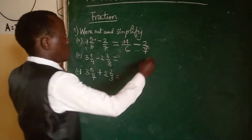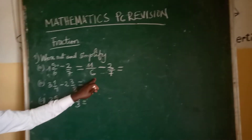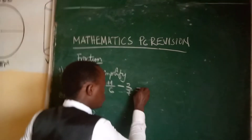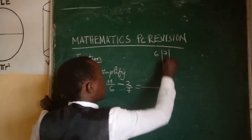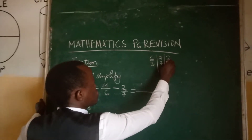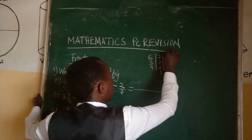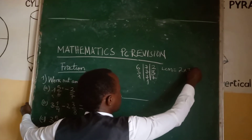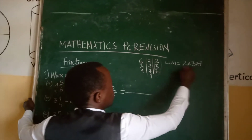We are subtracting fractions with different denominators, so we first look for the lowest common multiple. We have denominators 6 and 7. We prime factorize: divide by 2 to get 3 and 7, then divide by 3 to get 1 and 7, then divide by 7 to get 1 and 1. So LCM equals 2 times 3 times 7, which is 6 times 7 equals 42.